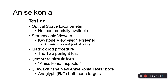There are a number of different ways to test anisoconia. I'll be honest — we don't really do these very often in the clinic. I'm just letting you know they exist so you can use them if needed. These include optical space eikonometers, stereoscopic viewers (sometimes called keystone viewers), a procedure using Maddox rods, computer simulators, and an anisoconia test book.